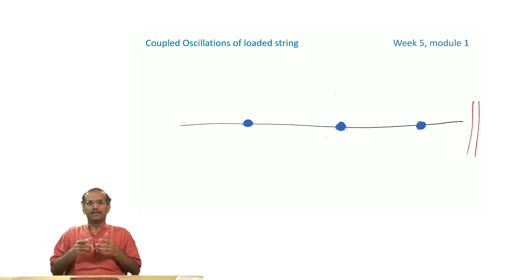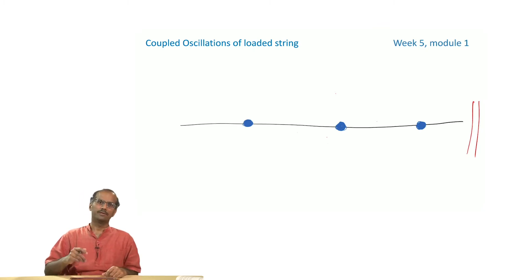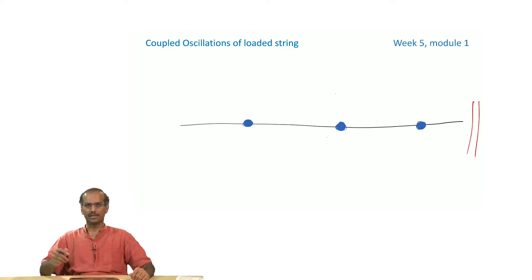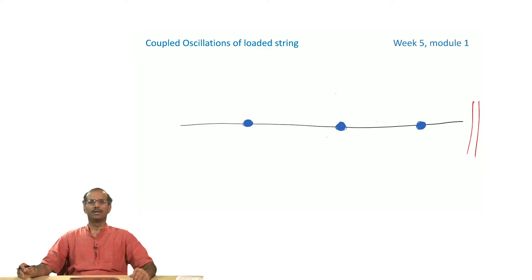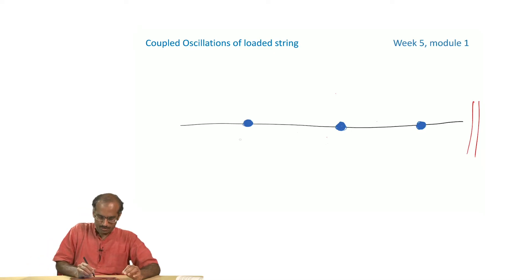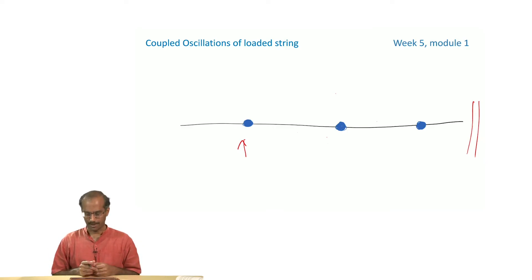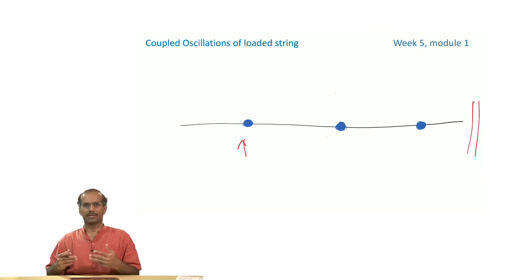You have what are called beads and they are tied through a spring. If you make such a system, which is very easy to do, and if you try to oscillate one of them or just disturb one of them, very soon the one next to it will also get disturbed, and a little later the one next to that will also get disturbed. So the disturbance created at one point is spreading through the string, and that is because there is coupling.